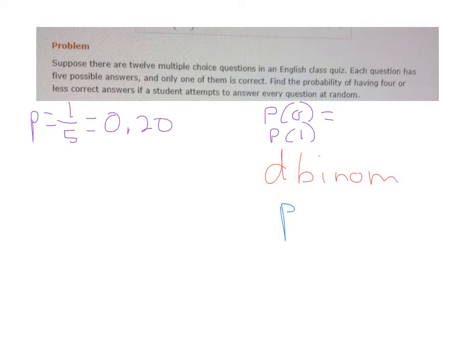The d-binom, this one here, what it does is it gives you the probability if you know the exact number of successes you want. So if I said what's the probability that I'll get exactly six questions right on this test, then I would use the d-binom.